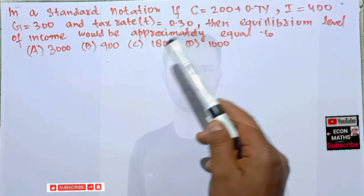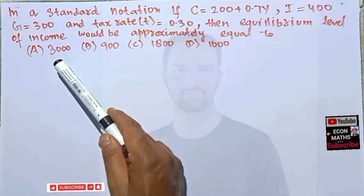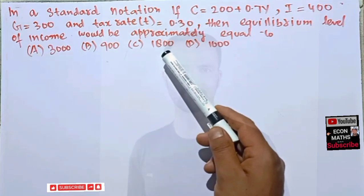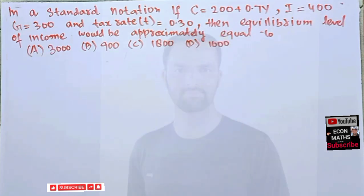And the tax rate is 0.3, then equilibrium level of income would be approximately equal to what? The options are 3000, 9000, 1800, or 1000.